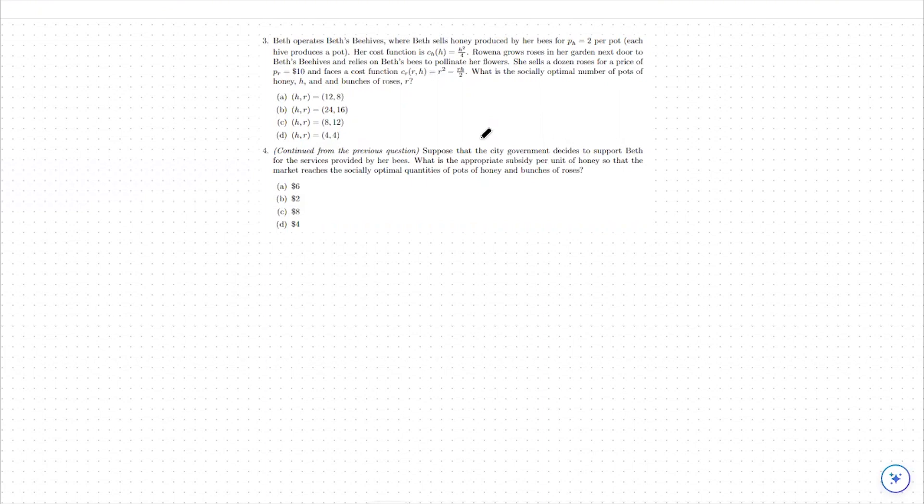In this case, with question three, we were looking at a positive externality. What we need to do with question four is see how we can get to the socially optimal level that we solved for in question three.